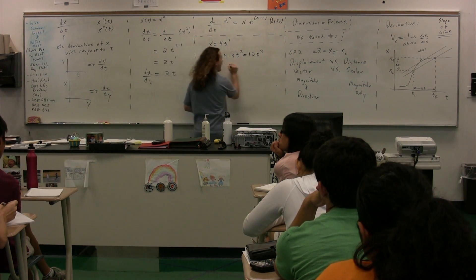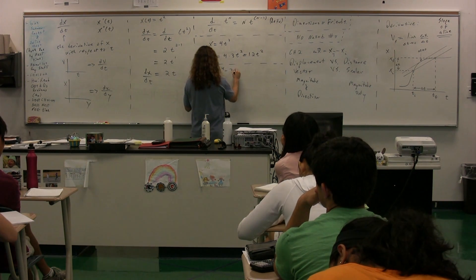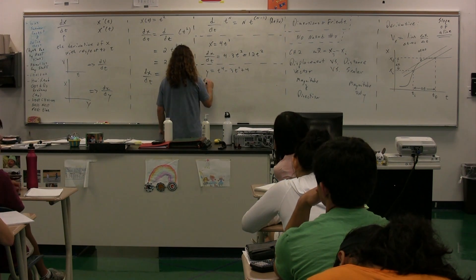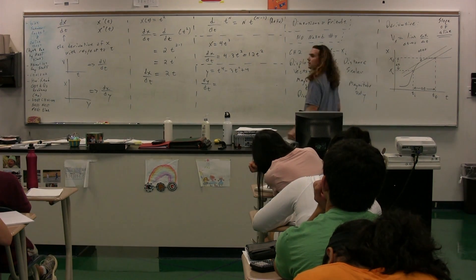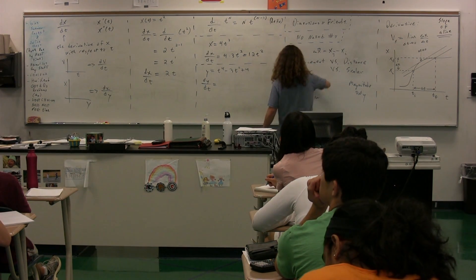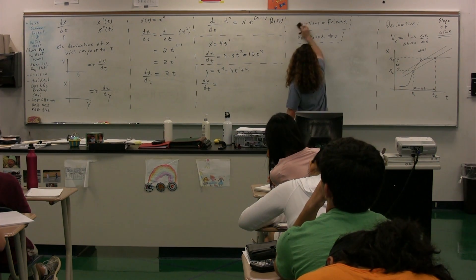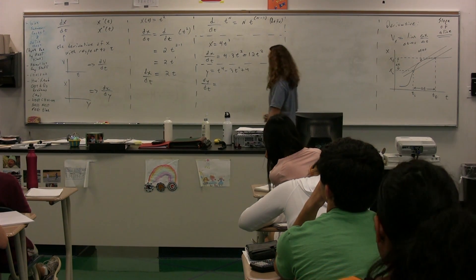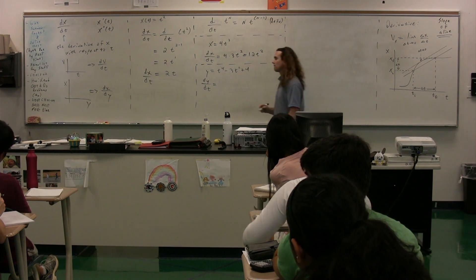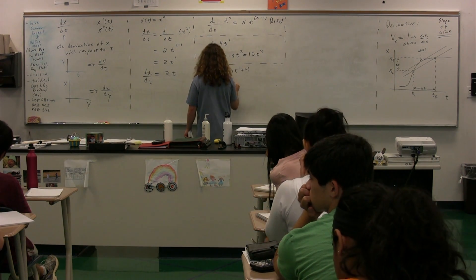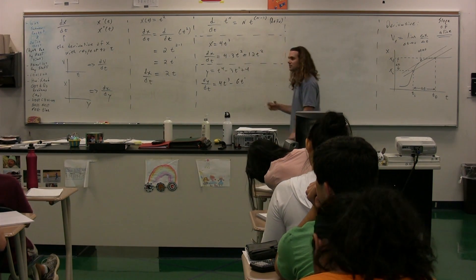Okay. What if we have, instead, y is equal to t to the fourth power minus 3t squared plus 4? What is dy/dt equal to in this case? James. So first, the real thing is t to the fourth power. Right. t to the fourth power. What are we going to do with that? 4t cubed. Okay. So this one is 4t cubed minus? 6t. 6t. Just to be clear, I'm going to put the 1 there, but yes. 6t is fine.